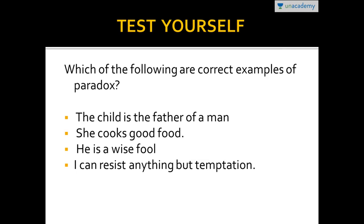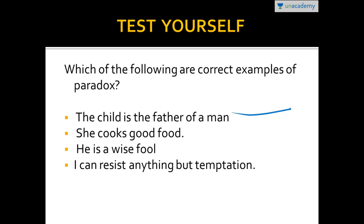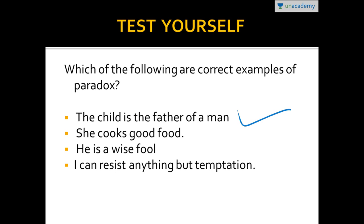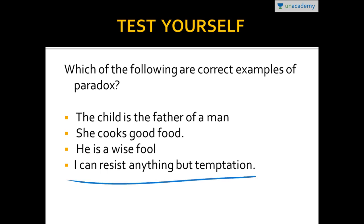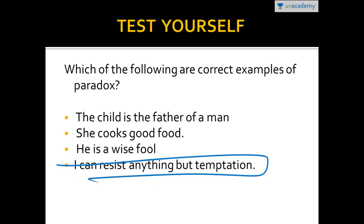Here is the test — find out which of the following are correct examples of paradox. 'The child is the father of a man' — correct, because a child cannot be a father of a man, making it self-contradictory. 'She cooks good food' — no contradiction, so this is not a paradox. 'He is a wise fool' — if he is wise, how can he be a fool? This is a paradox. 'I can resist anything but temptation' — if you can resist anything, how can you not resist temptation? This is also a paradox.